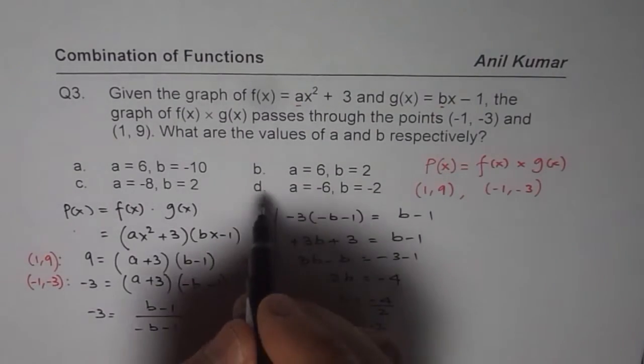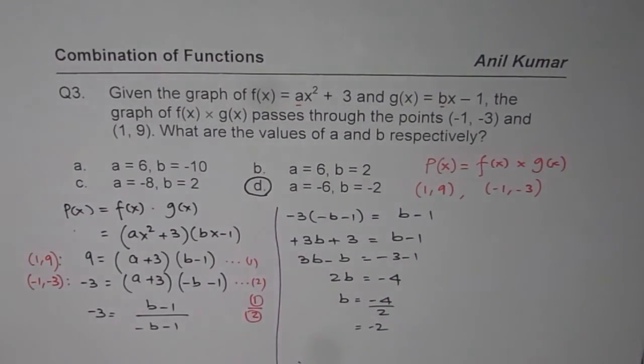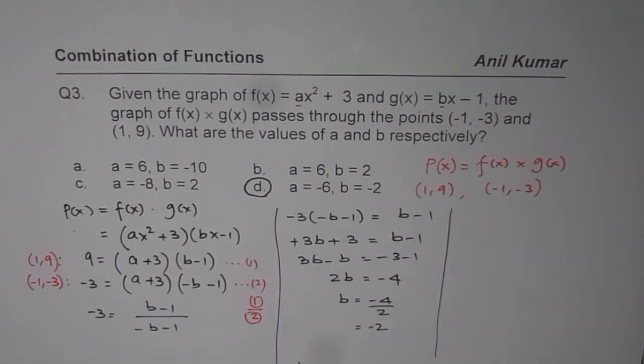So, b minus 2 is only d. We kind of have only one option, so that should be the right answer. But let us check for the value of a.